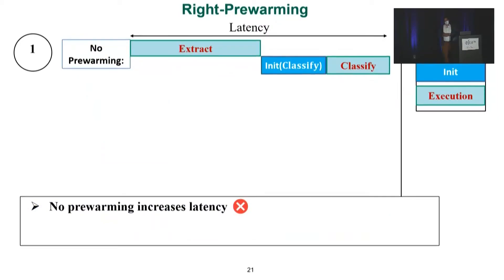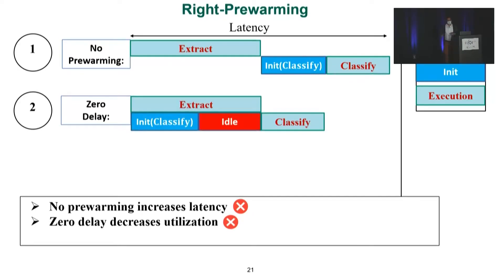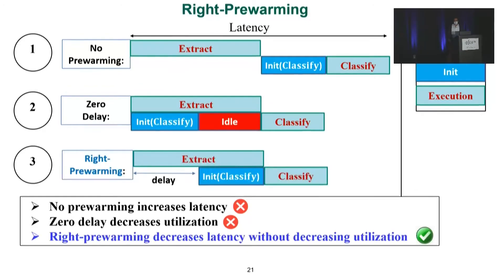With respect to cold starts, we propose pre-warming. The current state of practice is that whenever a function does not have a warm VM, the cloud provider initializes a VM, and the user sees an additional initialization latency. We could be greedy and initialize the VM very early at the beginning of execution, but this adds idle time on the provider side. The technique we propose is to select the right duration for a delay — this allows us to decrease latency without decreasing utilization.